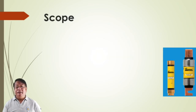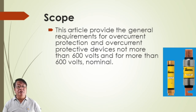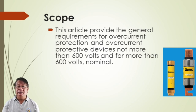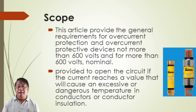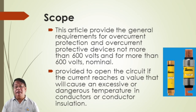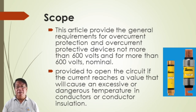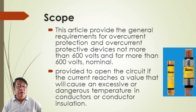Article 2.4 covers overcurrent protection. The scope provides general requirements for overcurrent protection and overcurrent protective devices for not more than 600 volts and for more than 600 volts nominal. These are provided to open the circuit if the current reaches a value that will cause an excessive or dangerous temperature in conductors or conductor insulation — protecting conductors and any other load in the system.